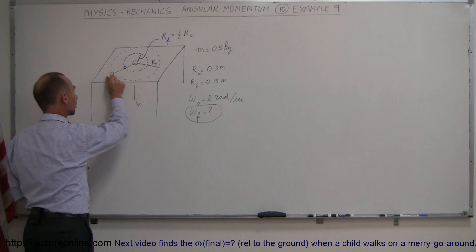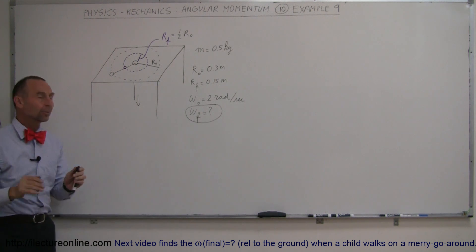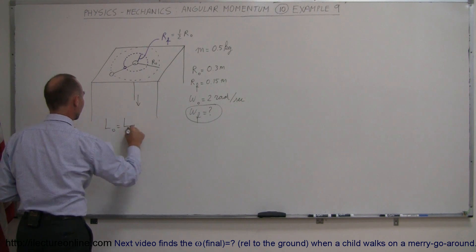You pull this down so that the puck goes in a little bit closer to half the distance away from the hole and yes, angular momentum is conserved which means we can say that L initial equals L final.